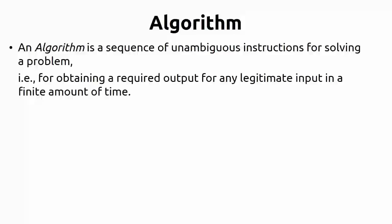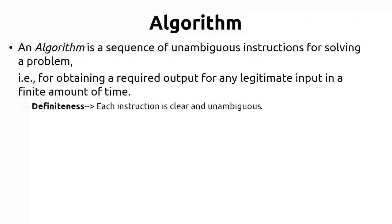An algorithm is defined as obtaining a required output for a legitimate input in a finite amount of time. Whenever you provide a sequence of instructions as an algorithm, it has to take input and provide output within a finite amount of time. It never goes to an infinite amount of time, because if it does, you cannot call it an algorithm. Based on these constraints, we have five properties specified for an algorithm.